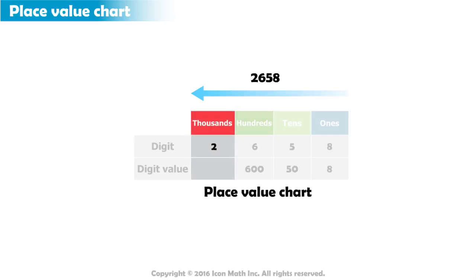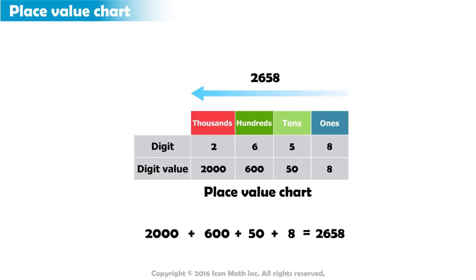In the thousands place, we have the digit 2, which has a value of 2,000. Joining all these numbers together, we get our number.